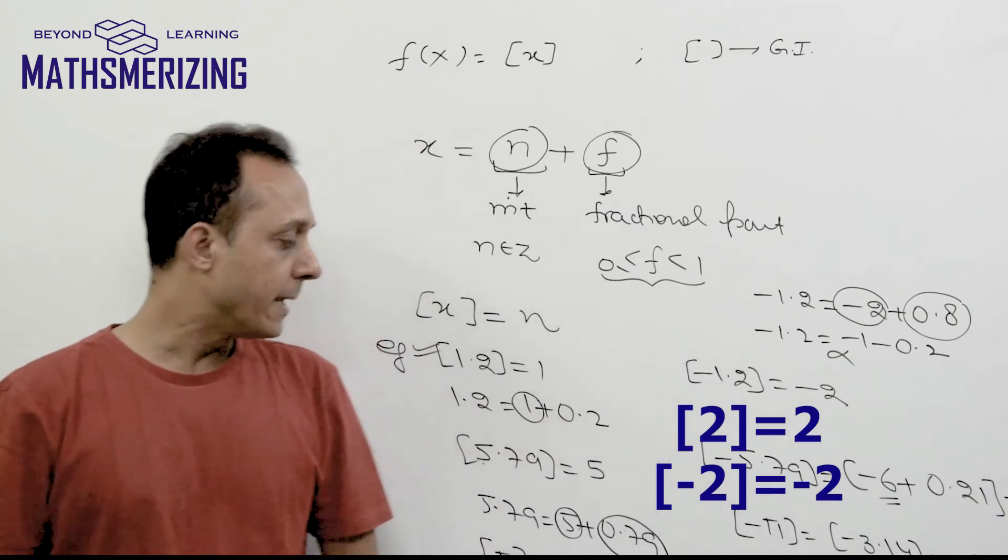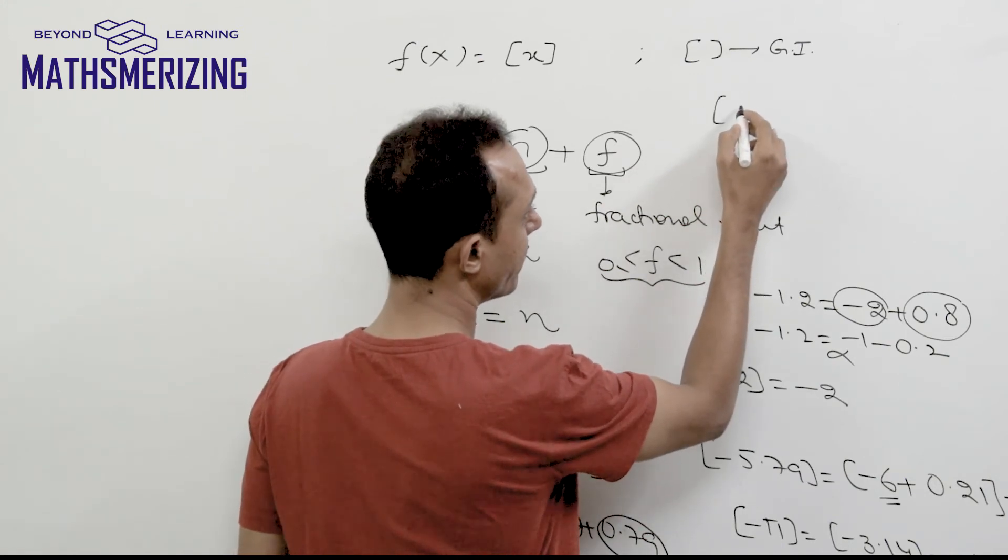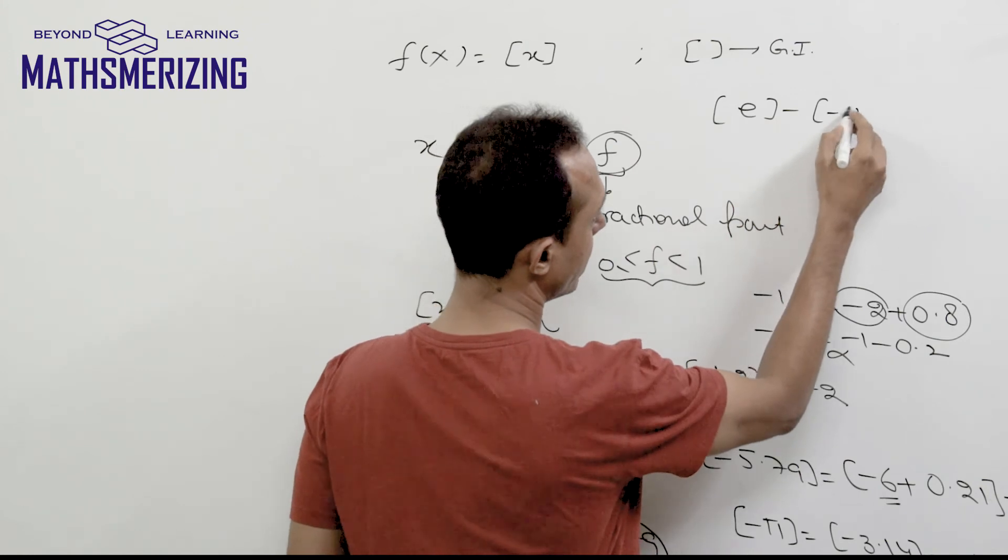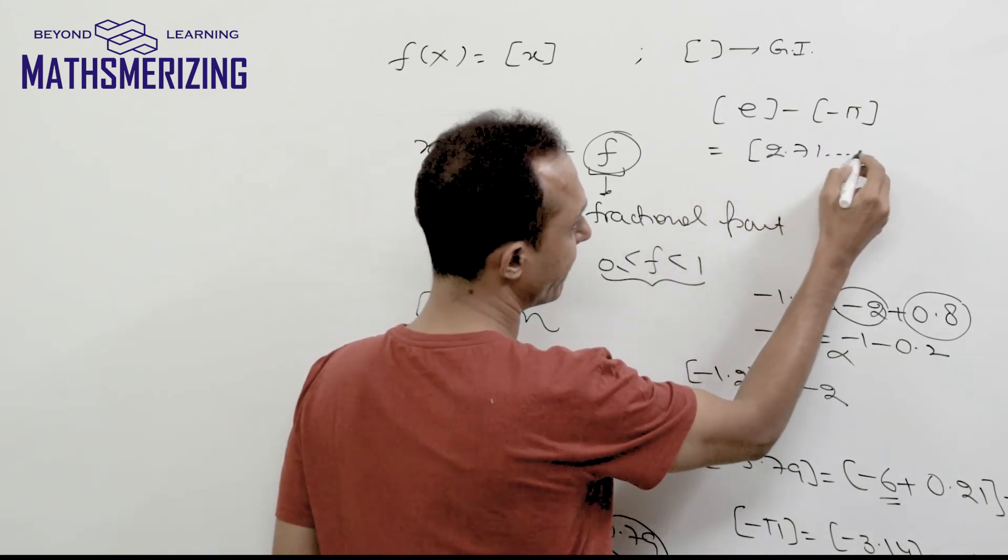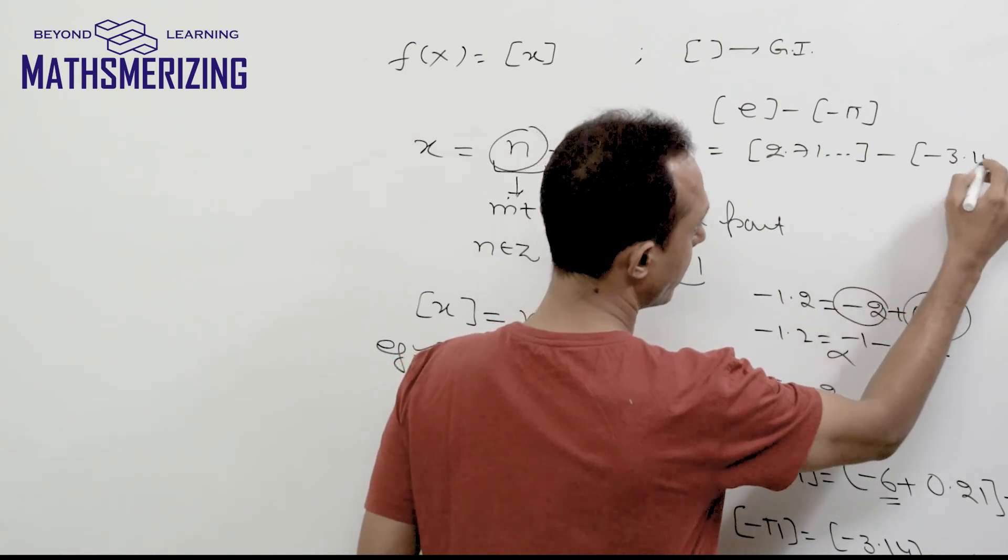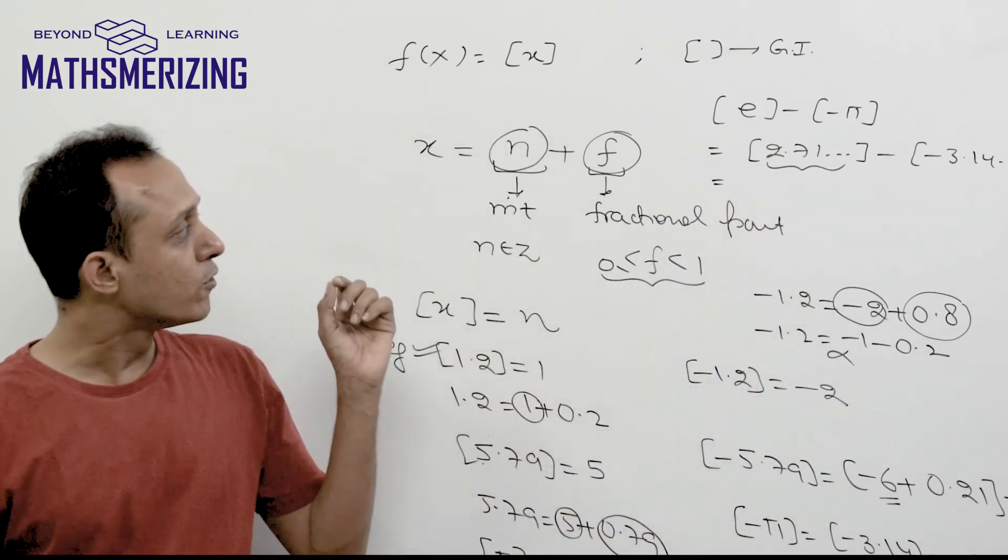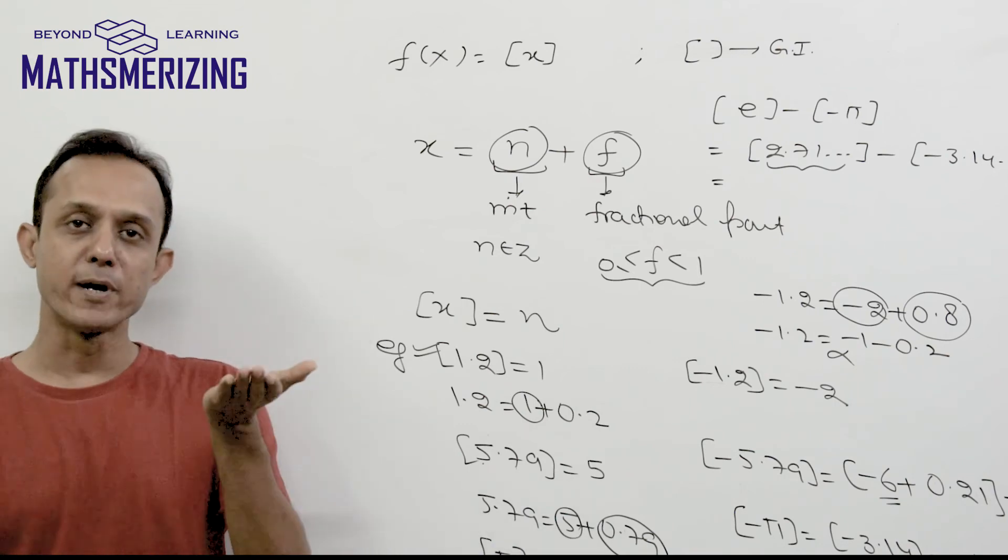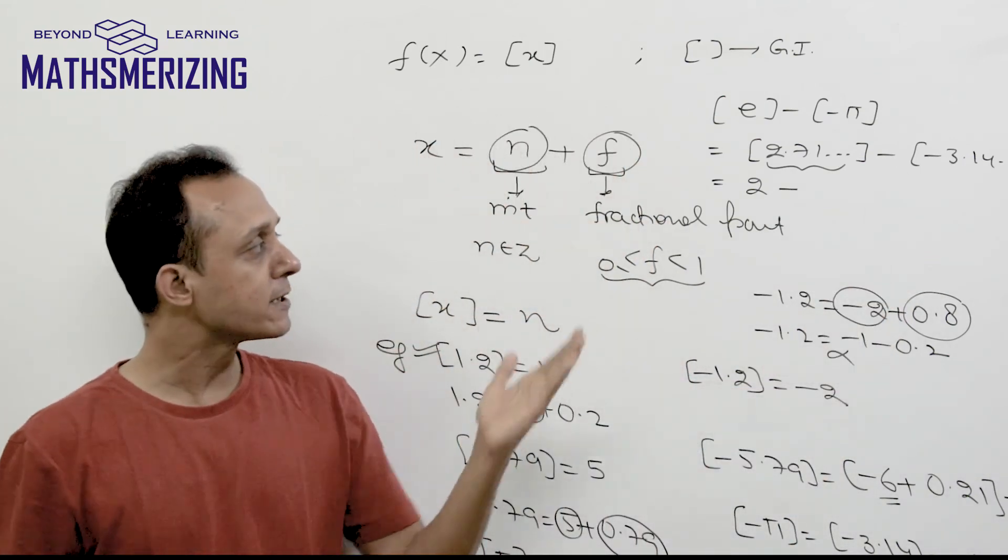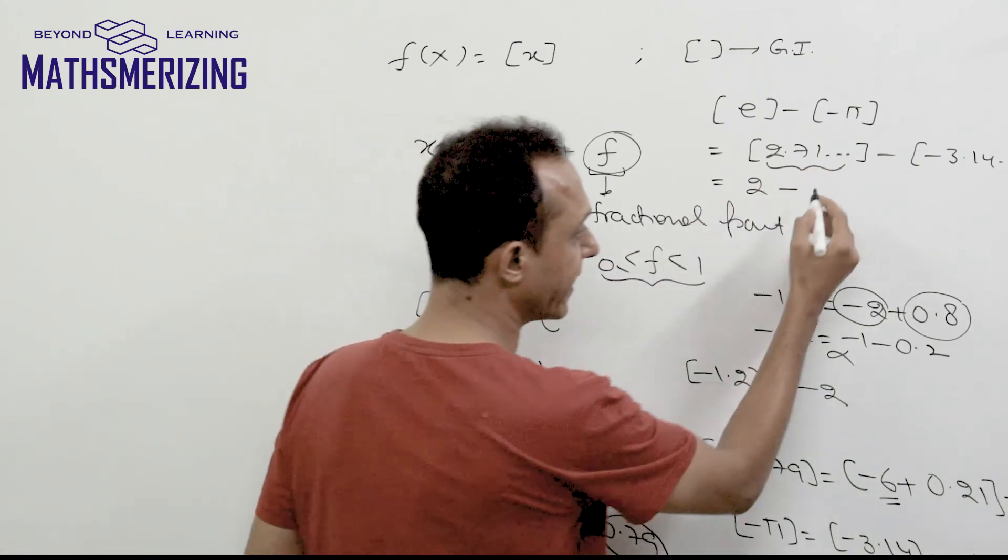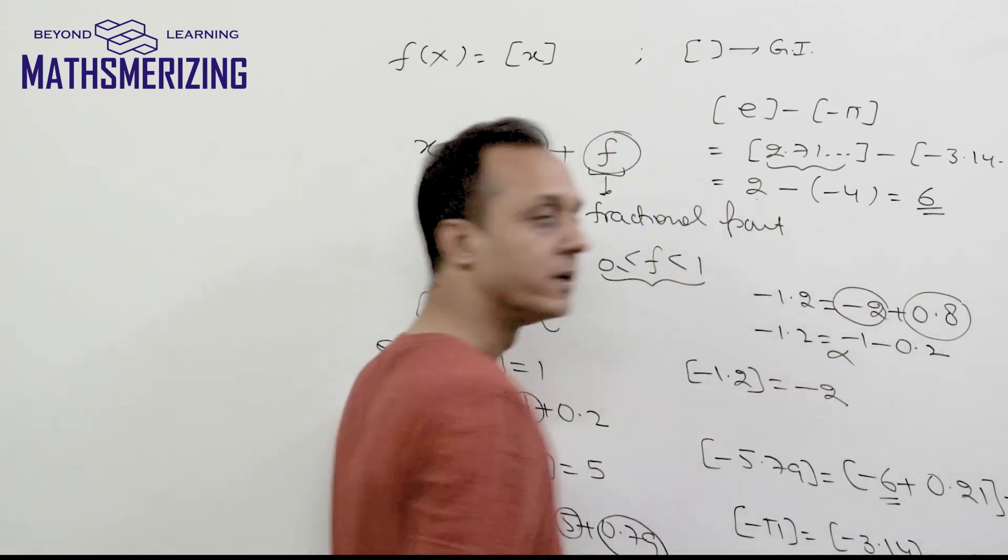Say for example I need to find the value of greatest integer function of 2.71 minus (-3.14). It's a positive number, so greatest integer function of 2.71 is 2 plus 0.71, the integral part is simply 2. Then minus (-3.14): -3.14 is -4 plus a positive fraction, so its greatest integer function will be -4. So 2 minus (-4) is 6. The answer to this question is simply 6.